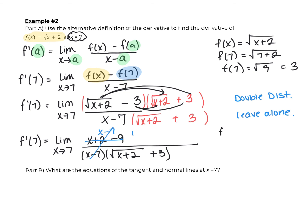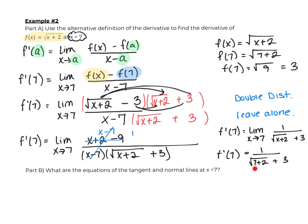So we have f prime of seven is the limit as x approaches seven of one over the square root of x plus two, plus three. Now we plug in seven using direct substitution: seven plus two is nine, square root of nine is three, and three plus three is six. So f prime of seven equals one over six.